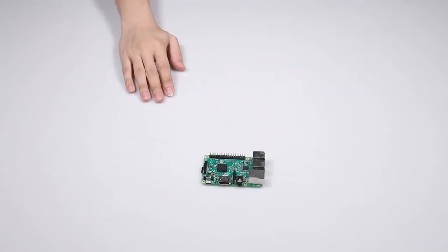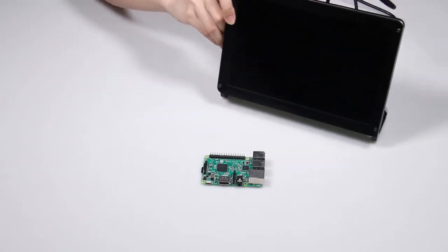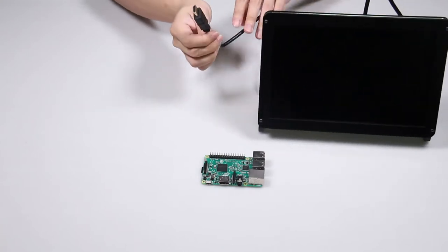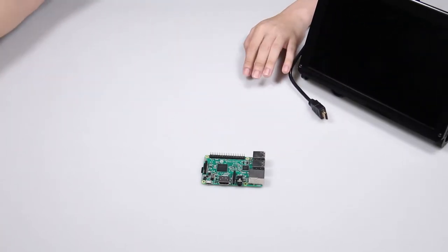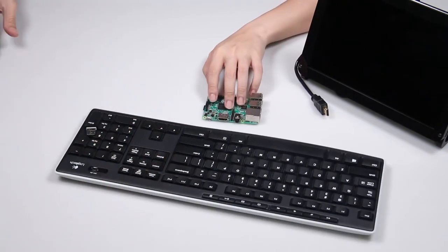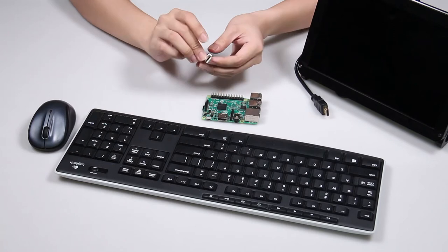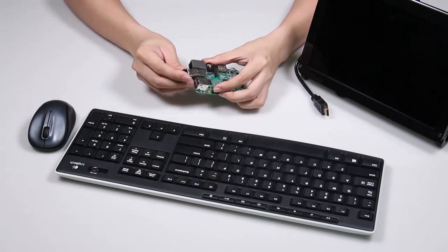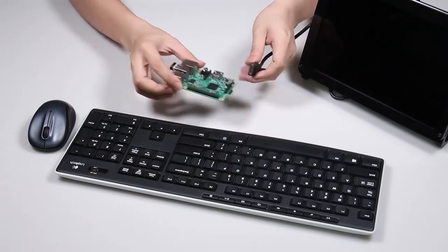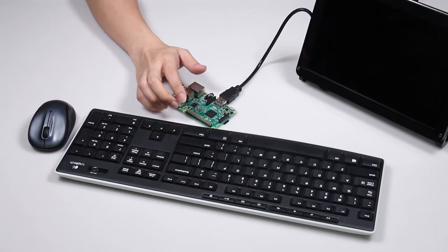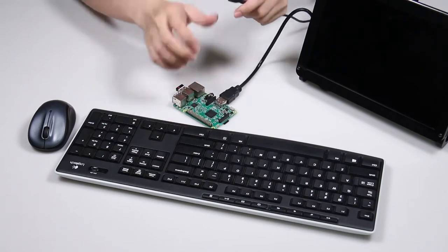Then you also need an HDMI monitor with HDMI cable, and you also need a USB keyboard and mouse. I have a wireless one here. Plug the USB keyboard and mouse into the USB ports, and also the HDMI cable. Then power the Raspberry Pi.